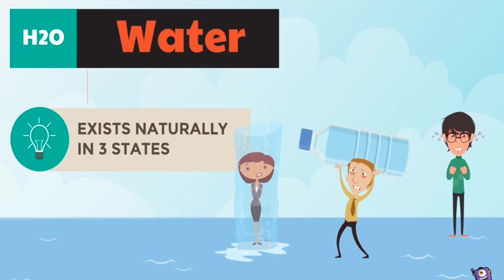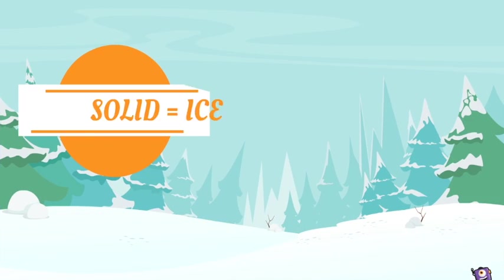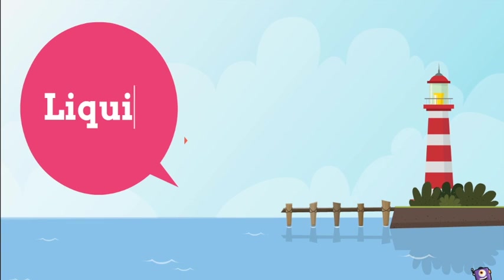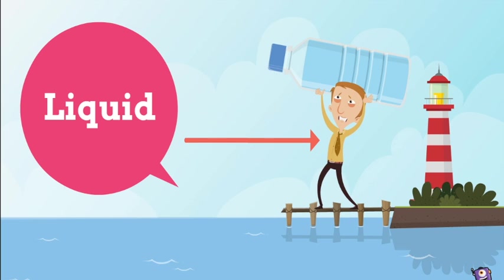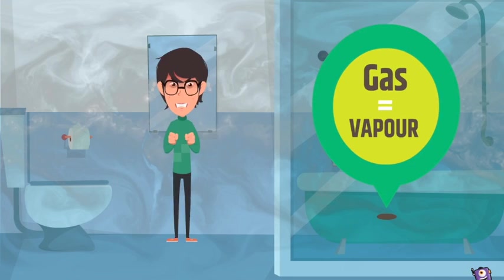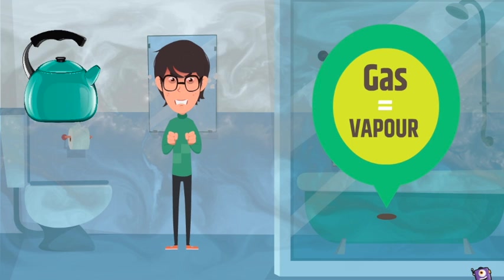Water naturally exists in three states. As a solid, water takes the form of ice, which we use as a cooling agent. As a liquid, water takes the form of the colorless, odorless, and tasteless liquid we drink. In a gaseous state, water takes the form of vapor, produced in evaporation and boiling of liquid water.